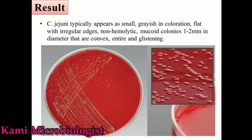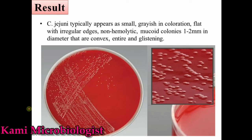Examine the colony morphology after 24 hours of incubation. This medium is specially used for the identification and isolation of Campylobacter jejuni. On this medium, Campylobacter jejuni produces small grayish colonies with irregular edges and is non-hemolytic, meaning it cannot lyse the blood. Moreover, these colonies are mucoid with a 1 to 2 mm diameter, and are also convex and shiny. That's all about the Campylobacter blood agar medium — thanks for watching.